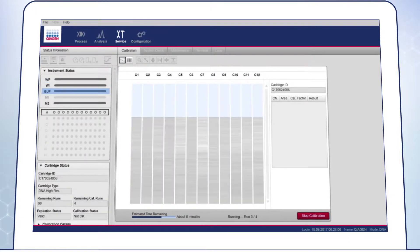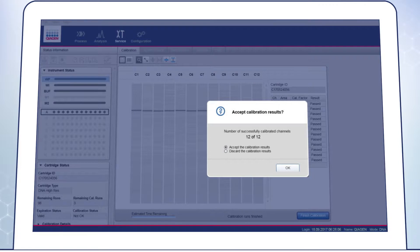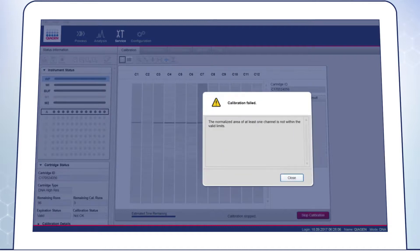Once the calibration is complete, the calibration result, passed or failed, is displayed next to the gel image. You can then check the calibration details in the software. Once the calibration is successful, the QIAXcel cartridge can be used. If the calibration fails, we recommend performing a hot water purge, as described in the Troubleshooting section of the User Manual.